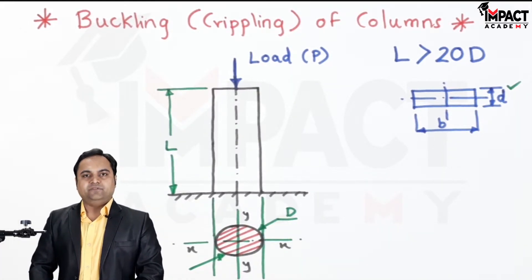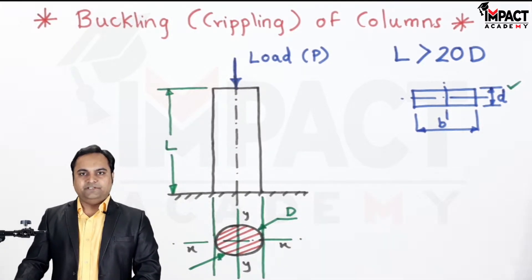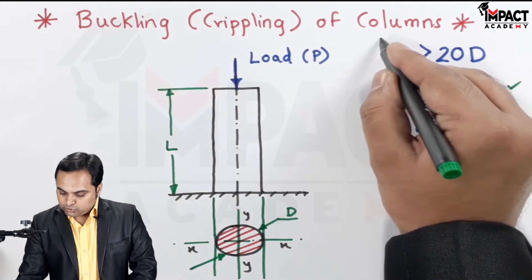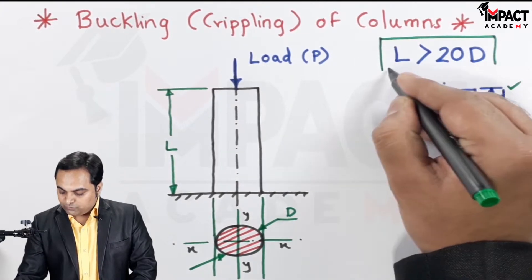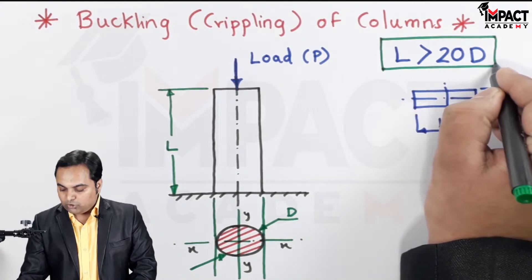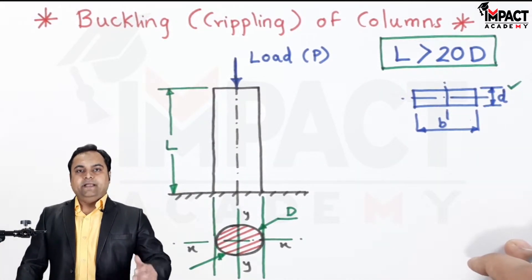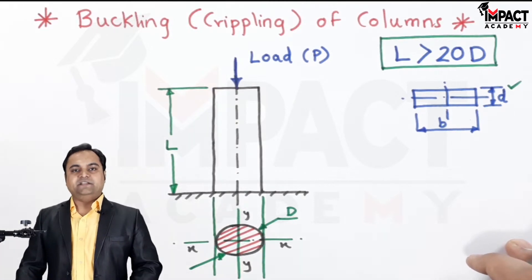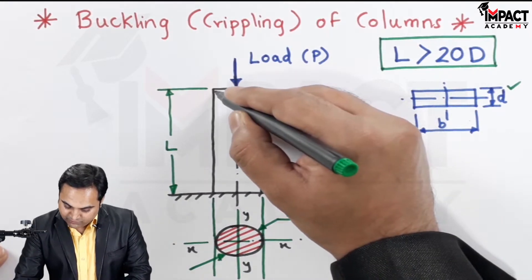Now, the case which I have taken in which there is a circular column is going to have only one diameter which is constant. So if the length is greater than 20 times the diameter, then it would be treated as a long column, and long column fails or it buckles or we can say it is going to get crippled, and that crippling is shown in this way.